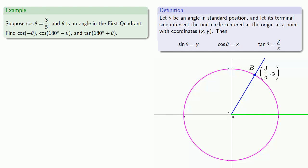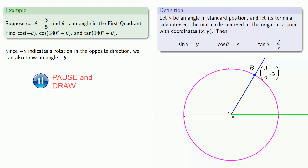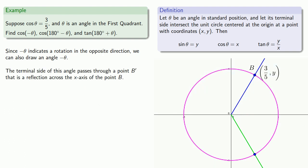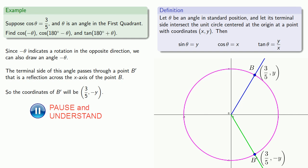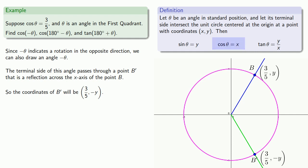Since minus theta indicates a rotation in the opposite direction, we can also draw an angle minus theta. The terminal side of this angle passes through a point p' that is a reflection across the x-axis of the point p. So that tells us the coordinates of this point will be (3/5, -y). But our x value is the cosine, so since p' represents an angle of minus theta, we can read this off: cosine of minus theta is 3/5.